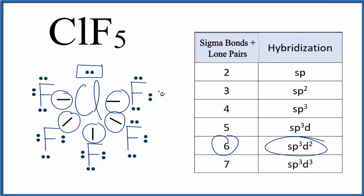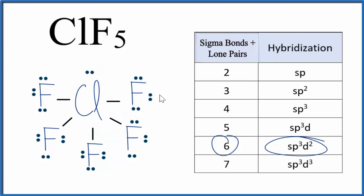Note that sometimes there are molecules that are exceptions to using these techniques — there's a link in the description to help you with those. Also note that you need a valid Lewis structure to use these techniques. If you need help drawing the Lewis structure for ClF₅, there's a link at the end of this video. Do note that chlorine can have more than eight valence electrons — an expanded octet — so this is the correct Lewis structure for ClF₅.